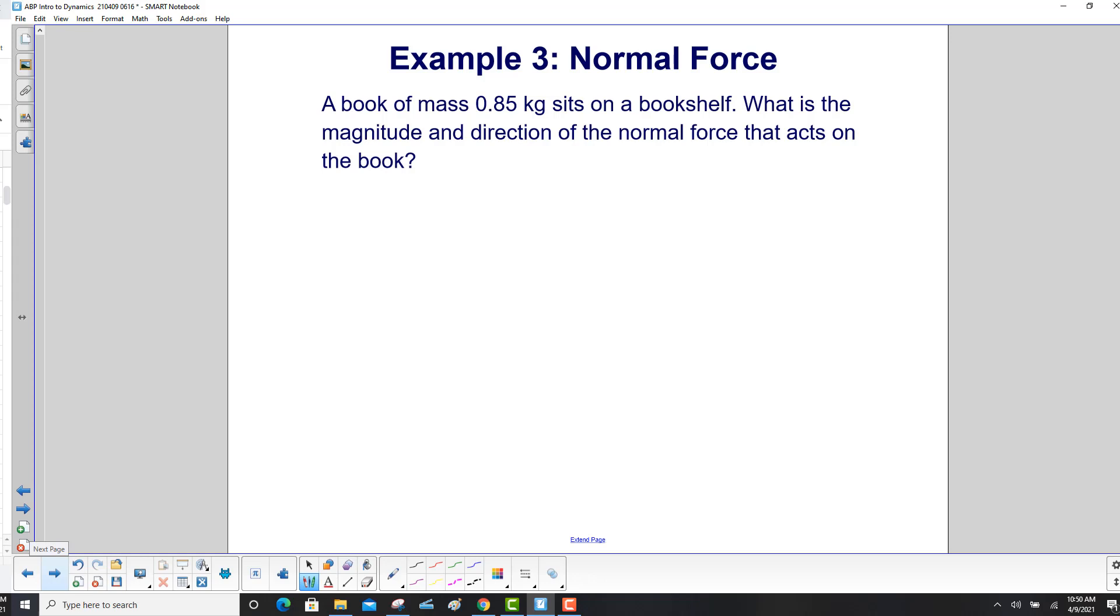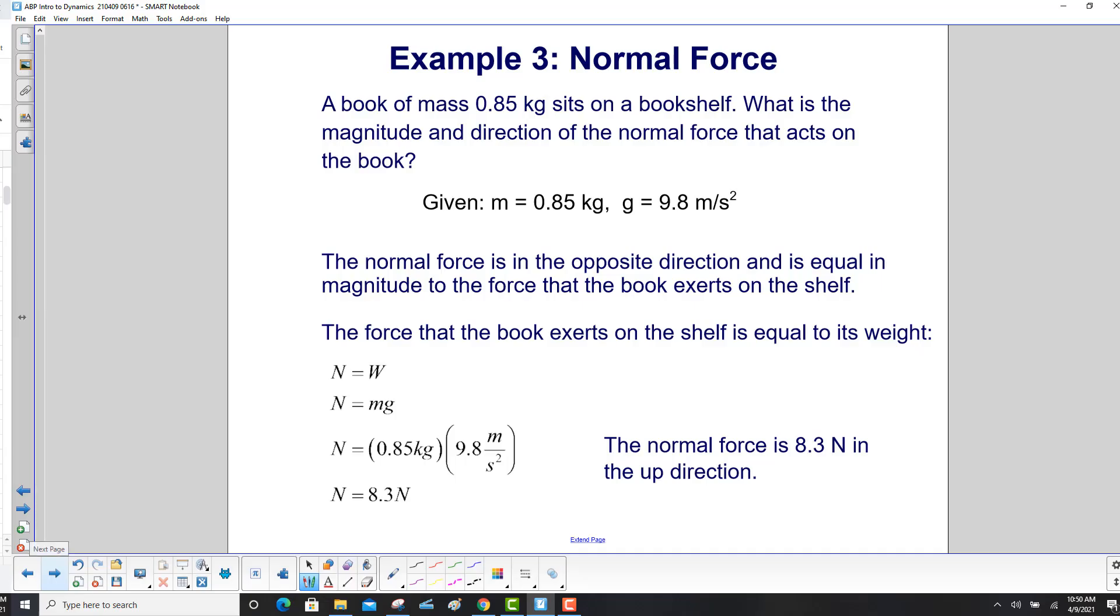A book of mass 0.85 kilogram sits on a bookshelf. What is the magnitude and direction of the normal force that acts on the book? We have our givens over here. Here's the mass of the book and the value of g. Now, the normal force is in the opposite direction of gravity and is equal in magnitude to the force that the book exerts on the shelf. The force that the book exerts on the shelf is equal to its weight.